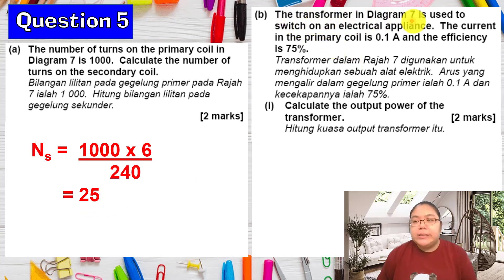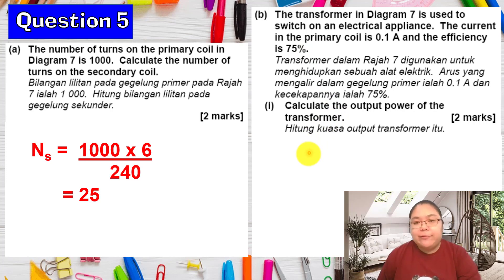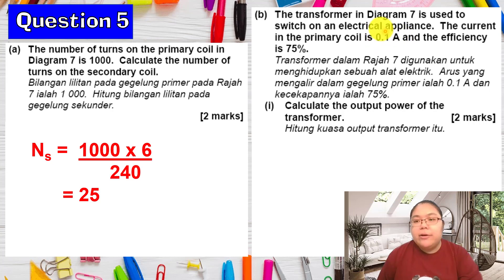Then we go to part B. The transformer in diagram 7 is used to switch on electrical appliances. The current in the primary coil is 0.1 ampere and the efficiency is 75%. From here, we need to find out the output power of the transformer using the efficiency formula. The question never provides the input power directly — they just give you the voltage and the current, which means we can calculate power because P equals VI.